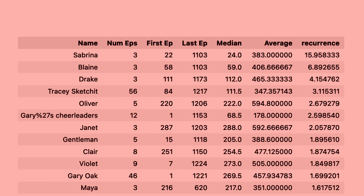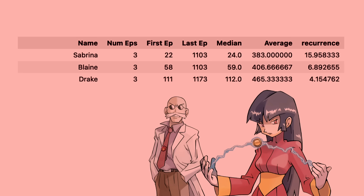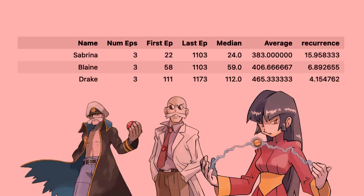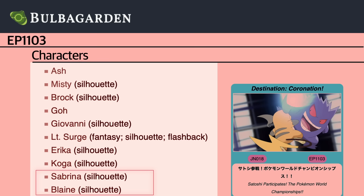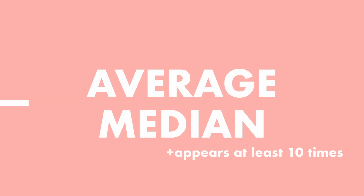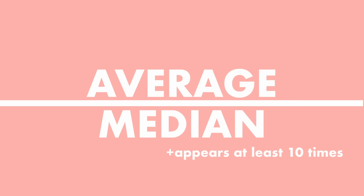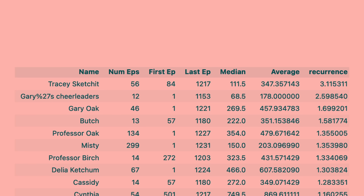It essentially gives us a score for how often that character appears outside of their main chunk of the series. Here's the character table now ordered by the top recurrence factor. So it's Sabrina, Blaine, and Drake with some pretty high recurrence factors. And while I think it's cool to see these characters again, a lot of that has to do with the fact that they just don't show up a lot in the series at all, only appearing in three episodes. Take a look at how Sabrina and Blaine are listed in episode 1103 — they're silhouettes, which just feels like it shouldn't count. I want to see characters who reoccur, not literal shadows of their former selves. So I put a condition that the character has to appear at least 10 times in order for them to be considered. Now we get something that's a little bit more reasonable.